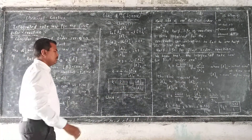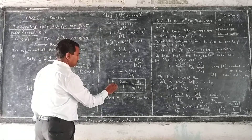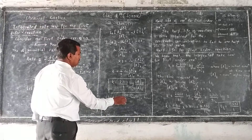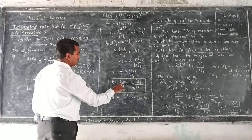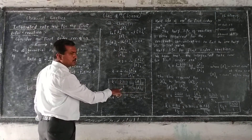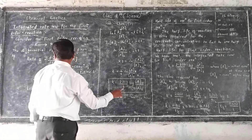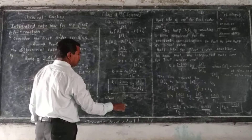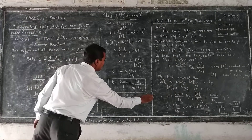The unit of this rate constant K is per second, because time is in the denominator. It can also be per minute or per hour.